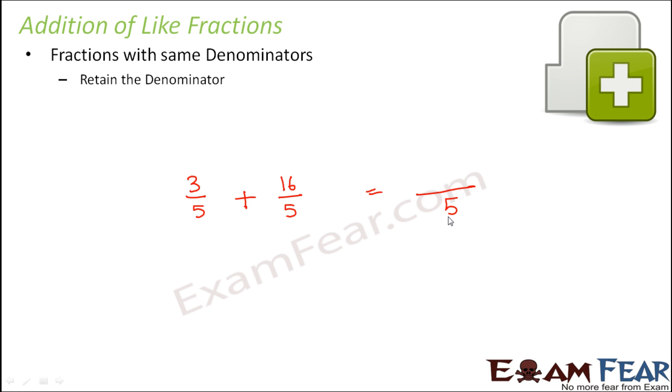So the denominator in the result is also going to be the same which is 5 and then what we do? We just add the numerators. So 3 plus 16. So 3 plus 16 is 19/5. So 19/5 is the sum of these 2 fractions.